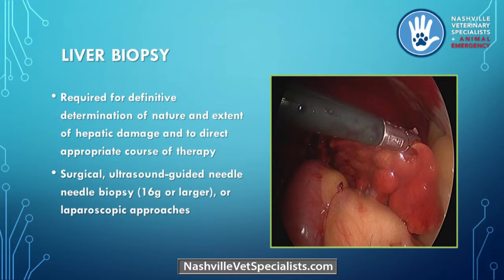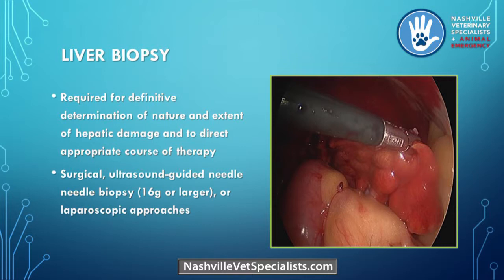I'm a liver biopsy snob because when we need a liver biopsy, I just want more tissue. Dr. Roach gets my liver biopsies laparoscopically, and it's so safe and valuable — for definitive determination of the nature and extent of hepatic damage and to direct appropriate course of therapy. Three ways to biopsy: surgical — most invasive but you're right there; needle biopsy — if you do it, 16 gauge or larger; and laparoscopy — where you can get as many pieces as you want.